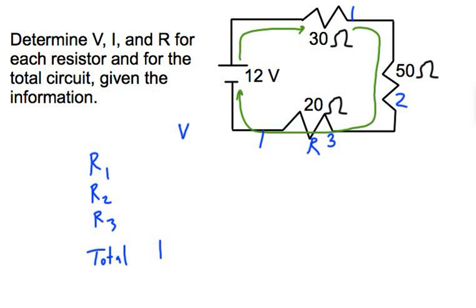I know my total voltage is 12 volts. I don't know anything about my current yet, but I do know the resistances. Resistor 1 is 30 ohms, resistor 2 is 50 ohms, resistor 3 is 20 ohms. That's all I know so far.